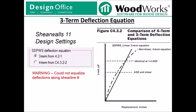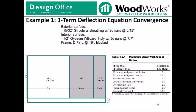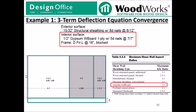To further demonstrate the non-convergent nature of the four-term deflection equation, I will go over two examples. Example one looks at deflection convergence within a shear line segment, and example two looks at deflection convergence between multiple segments within a shear line. For this first example, we'll look at the same shear line from the SDPWS commentary, except I have added gypsum wallboard on the interior surface. The maximum aspect ratio for gypsum wallboard is two as per table 4.3.4 of SDPWS 2015, so the program no longer includes the high aspect ratio segment 1-3 for the shear analysis — it is grayed out. Now we only have one eight-foot segment with wood structural panels on the exterior and gypsum wallboard on the interior.